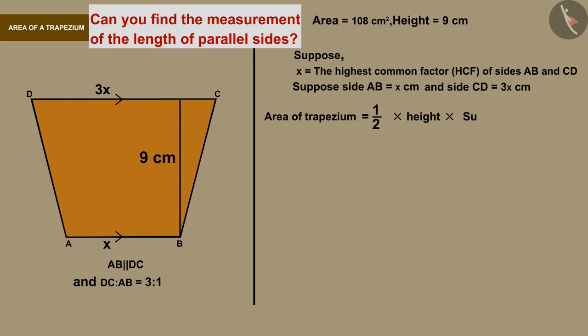So let's find the sum of the parallel sides. We know that the measurements of the parallel sides are x and 3x respectively, so their sum will be 4x.